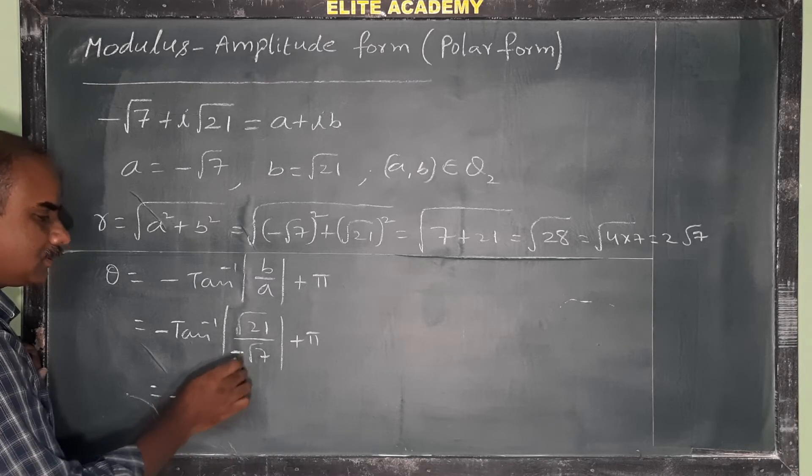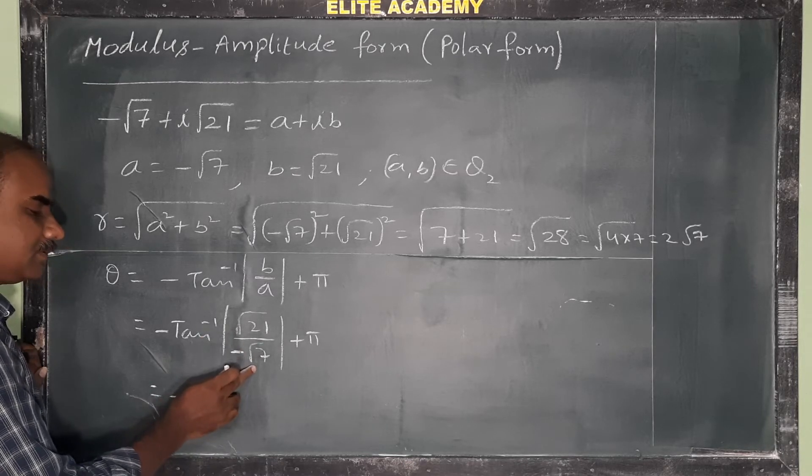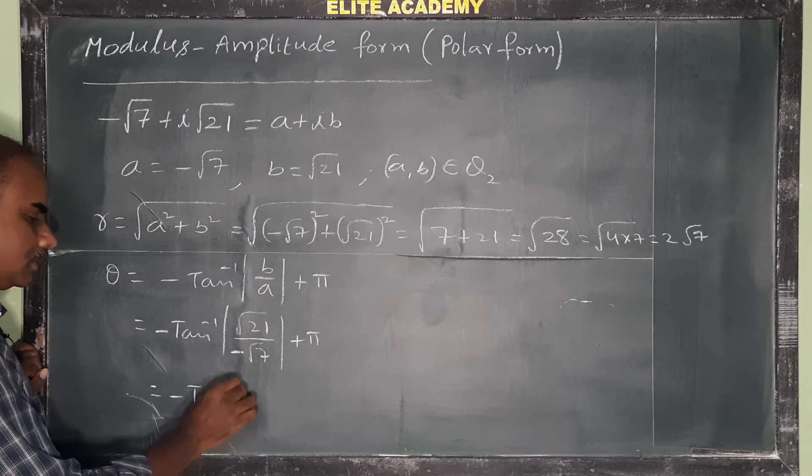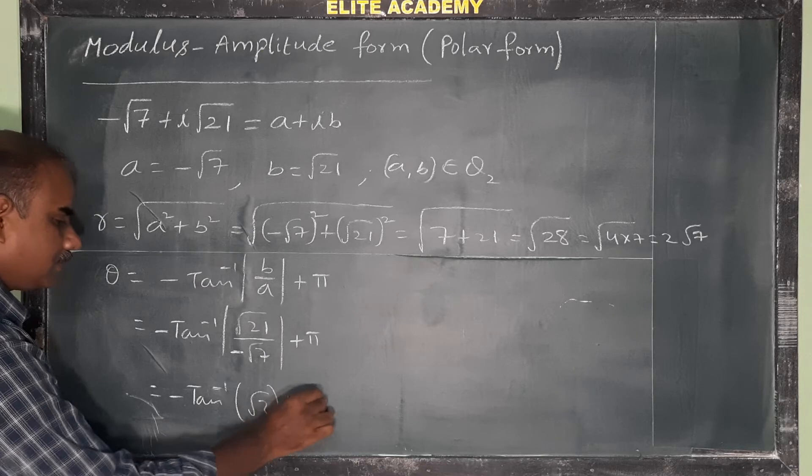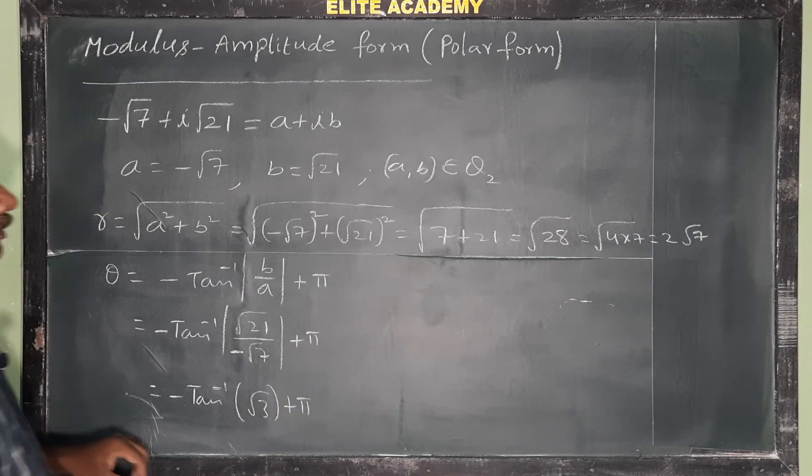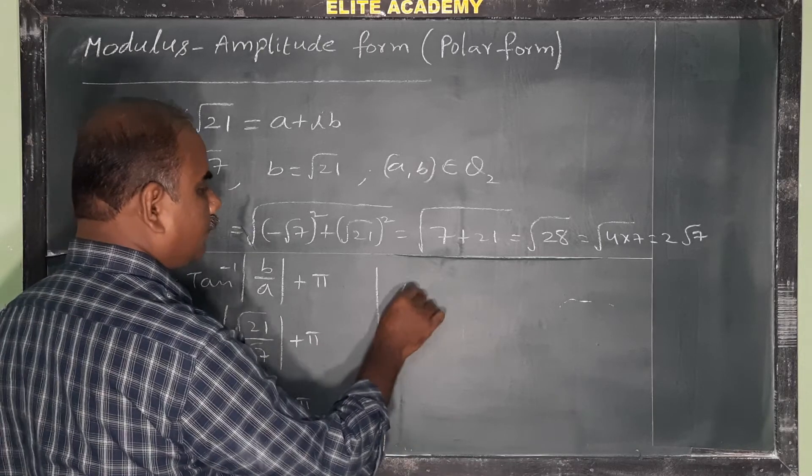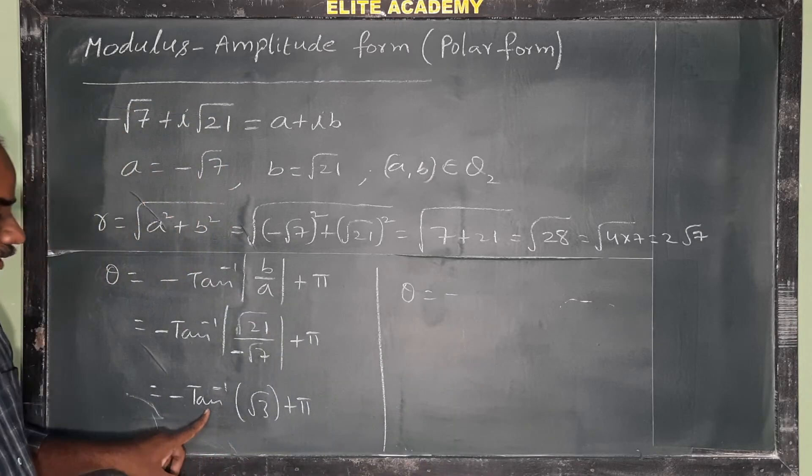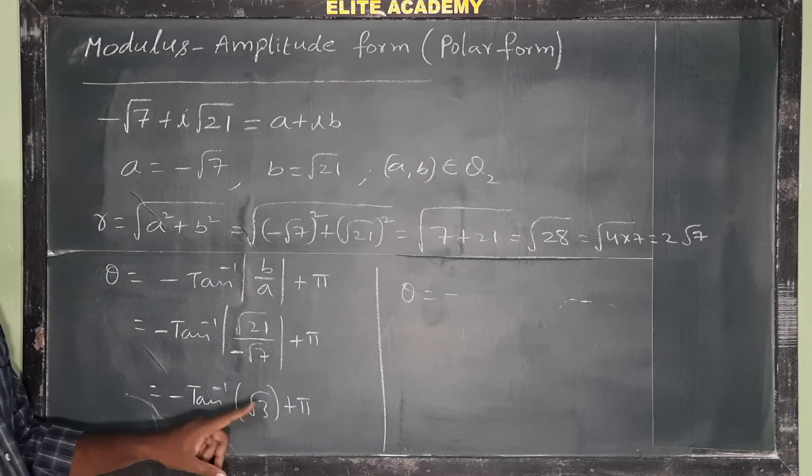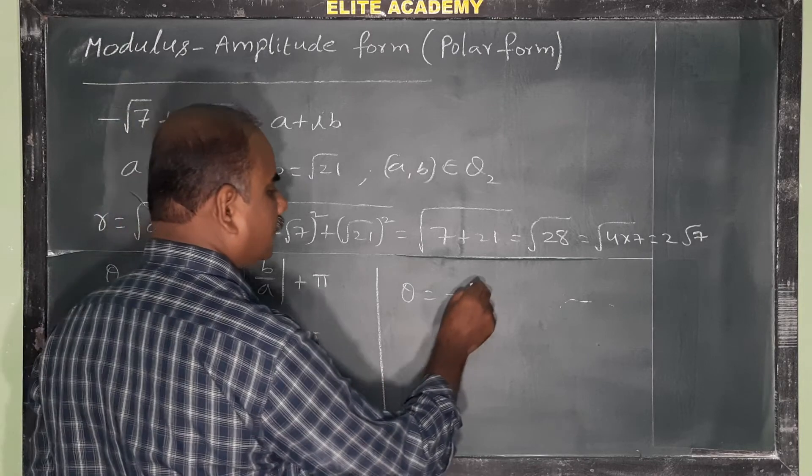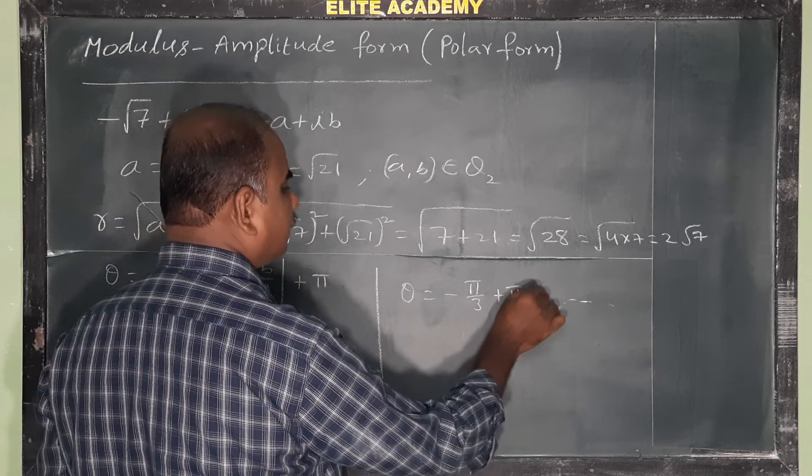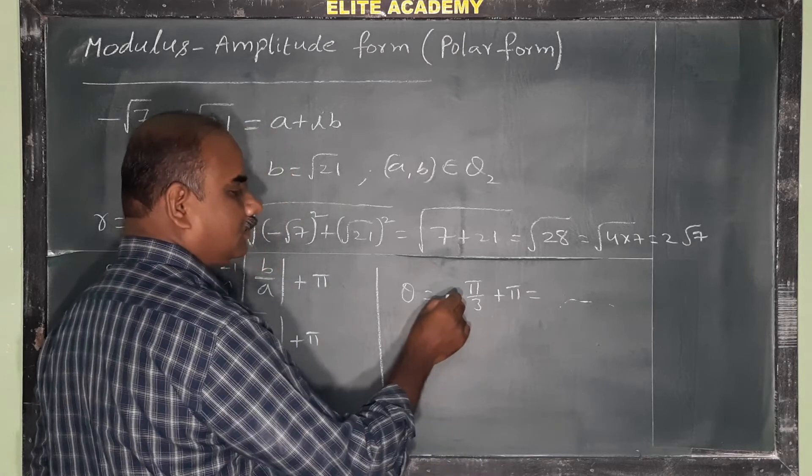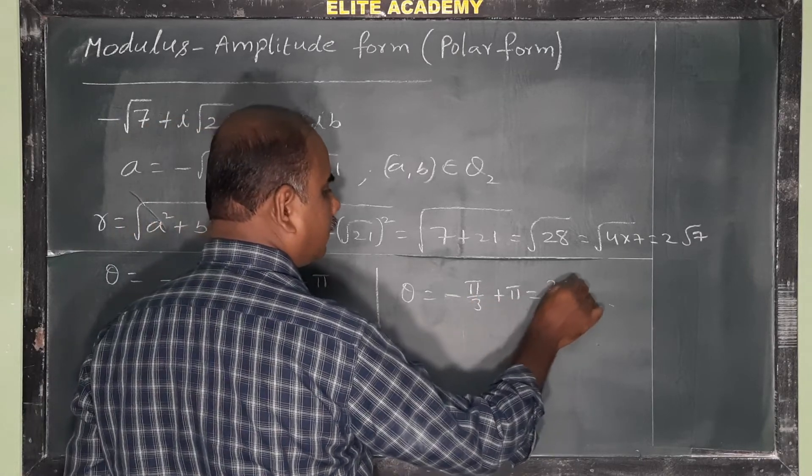And this is equal to, so minus plus, both in the modulus will apply root 21 by root 7, which is root 3, plus pi. Therefore, theta is equal to minus tan inverse root 3, and tan root 3 is 60 degrees. So 60 degrees means pi by 3 plus pi. So minus pi by 3 plus pi means 2 pi by 3.